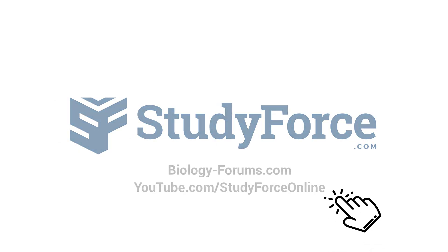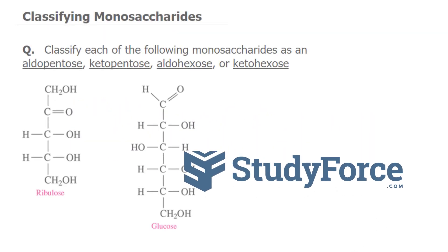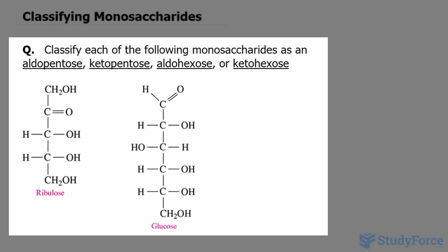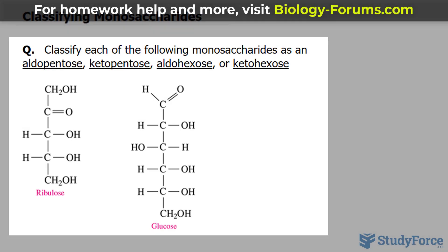In this quick tutorial, I'll show you how to classify monosaccharides. The question reads: classify each of the following monosaccharides as an aldopentose, ketopentose, aldohexose, or ketohexose.